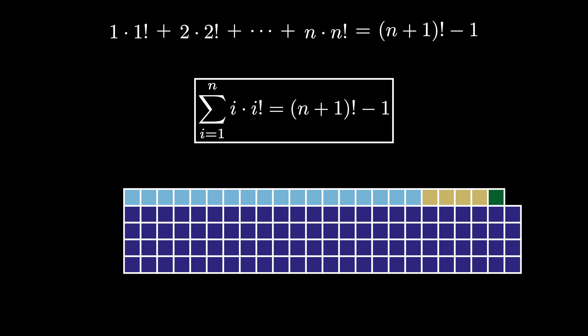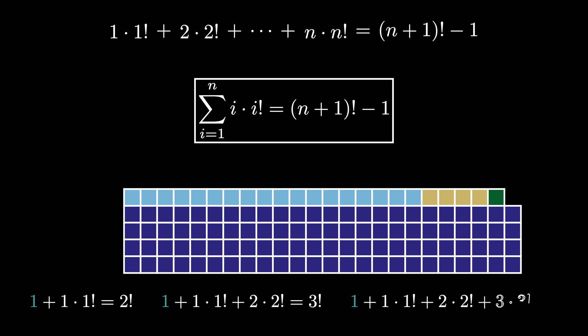As three examples: if you add 1 to 1 times 1 factorial, you get 2 factorial. If you add 1 to 1 times 1 factorial plus 2 times 2 factorial, you get 3 factorial. And if you add 1 to 1 times 1 factorial plus 2 times 2 factorial plus 3 times 3 factorial, you get 4 factorial.